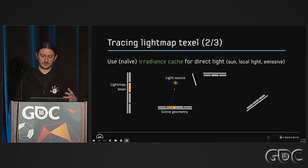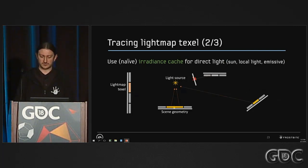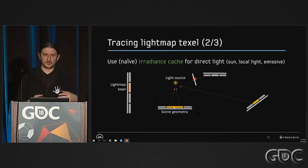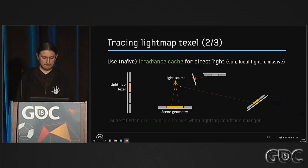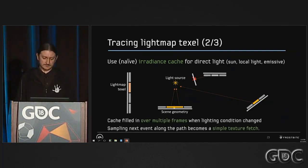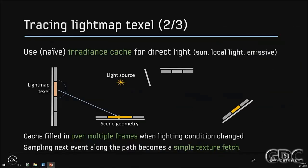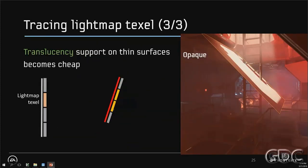Each frame, we evaluate all the light sources according to some shadow rays and accumulate all the contributions in the texels. We do that over multiple frames as well, because we want to integrate area lights and emissive surfaces. Once that is done, doing next event estimation is just a texture fetch on the path — you don't need to cast secondary rays, which accelerates everything.